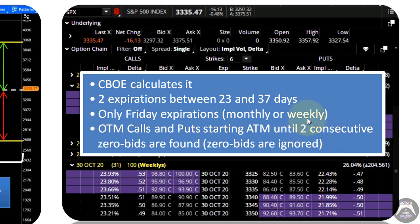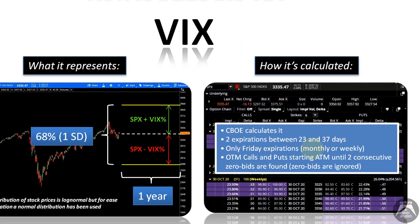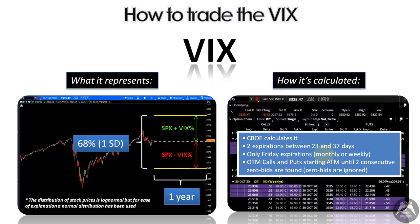The options closer to the at-the-money are going to be given more weight when calculating the number. This is done for calls as well as puts across both expirations between 23 and 37 days. The result is a number that represents the market's expectation for the volatility of the US market as represented by the S&P 500 index. The VIX represents the variation from the current price up and down over the next year with 68% probability — within one standard deviation.